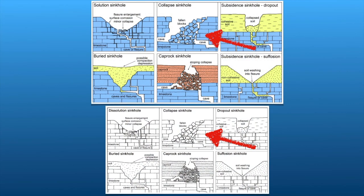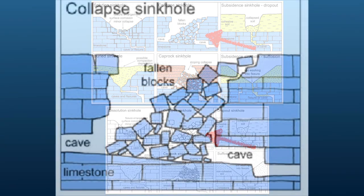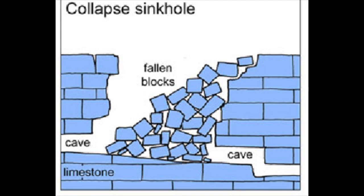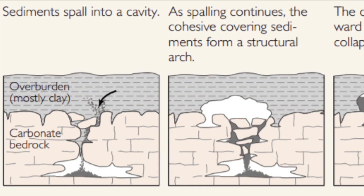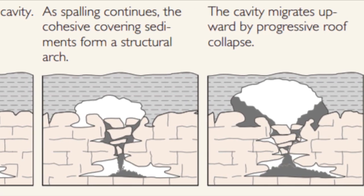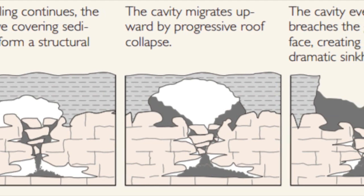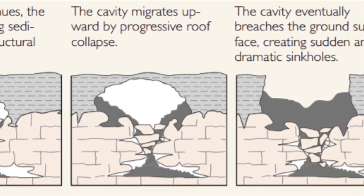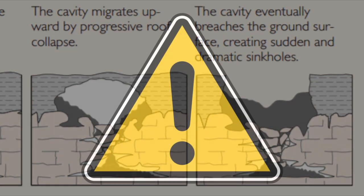The third and most dangerous type of sinkhole is a cover-collapse sinkhole. In these cases, the bedrock is covered by a layer of clay. Beneath this ground cover, however, water dissolves an underground cavern. Gradually, ground sediments begin to erode, or spall, into the cavern from the bottom. The ground continues to crumble from beneath until only a thin layer remains between the surface and the underground opening. When that layer collapses, the sinkhole opens up suddenly, swallowing any structures on top.